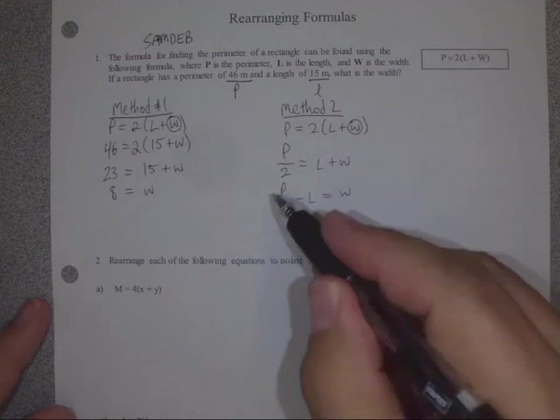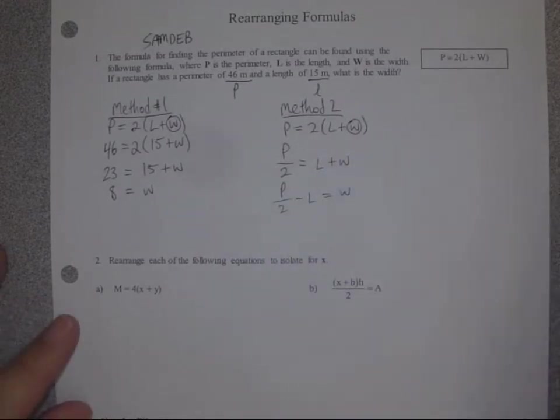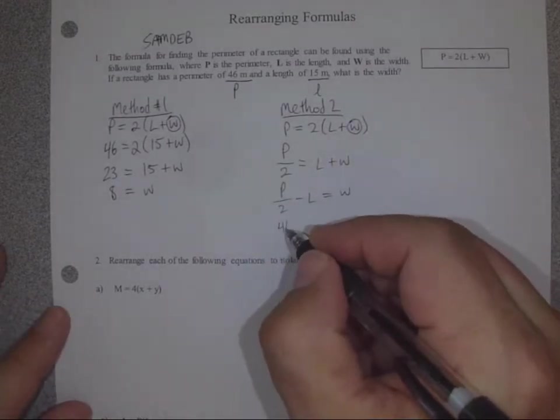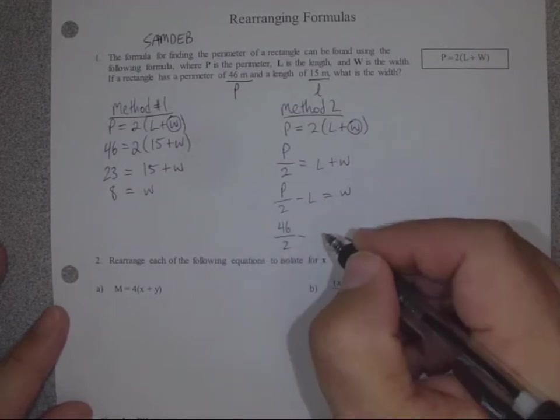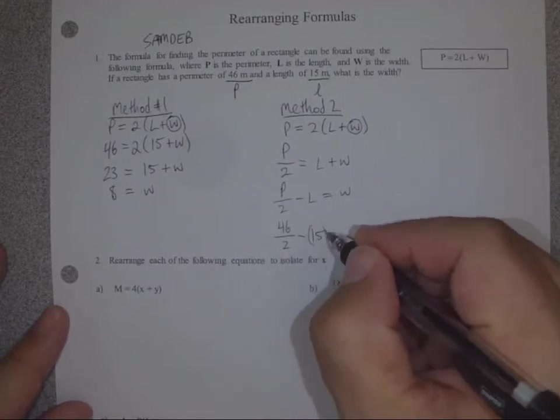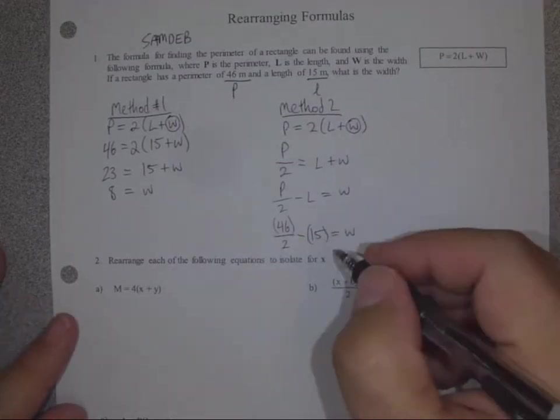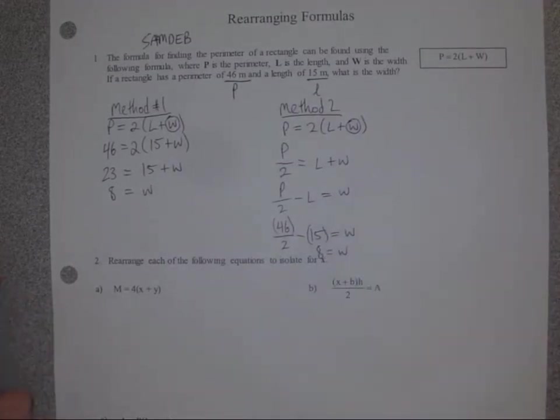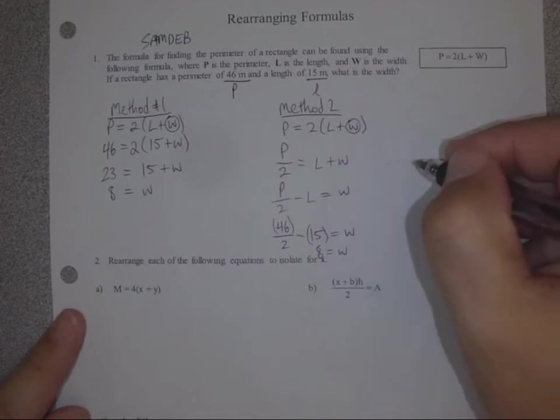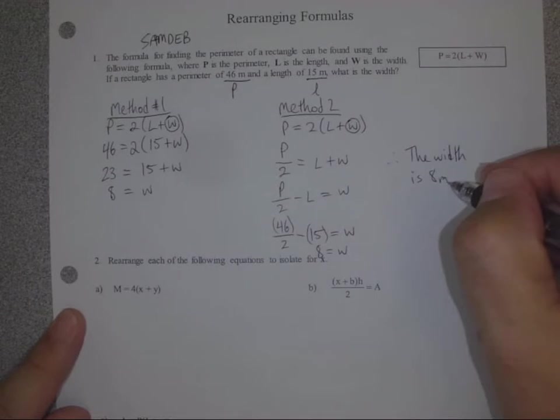Once you've got your formula worked out for W, you can then go ahead and substitute 46 for P and 15 for length and solve for W. W will equal 8 again. So therefore, the width is 8 meters. Done.